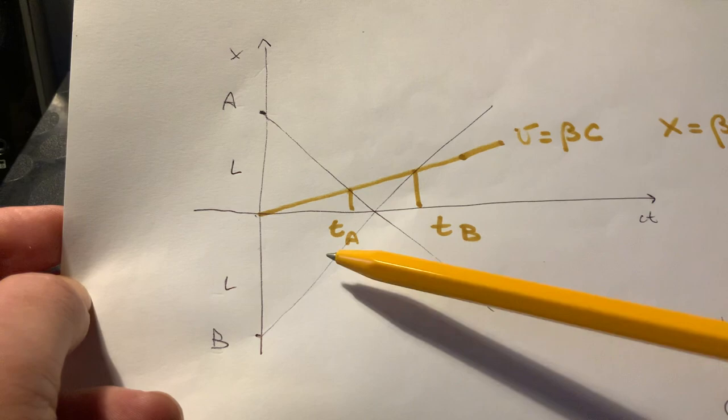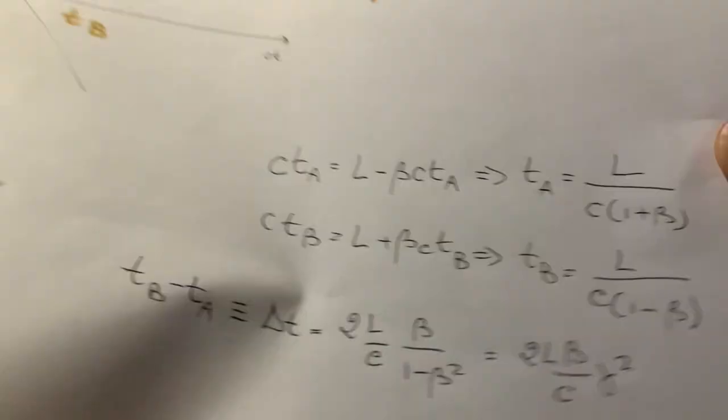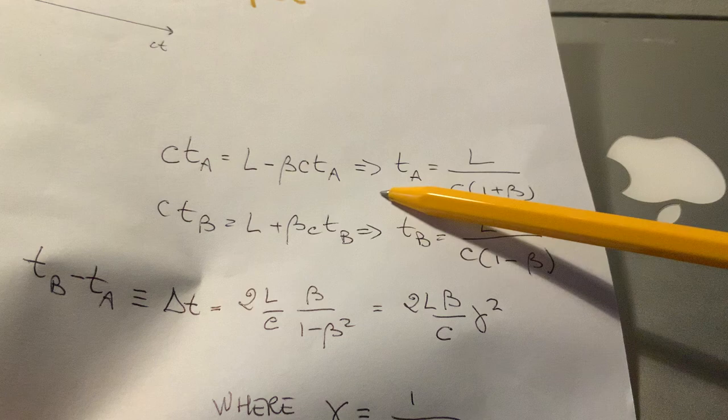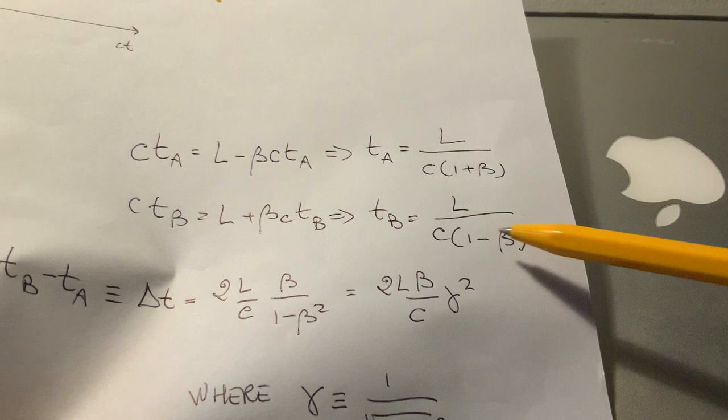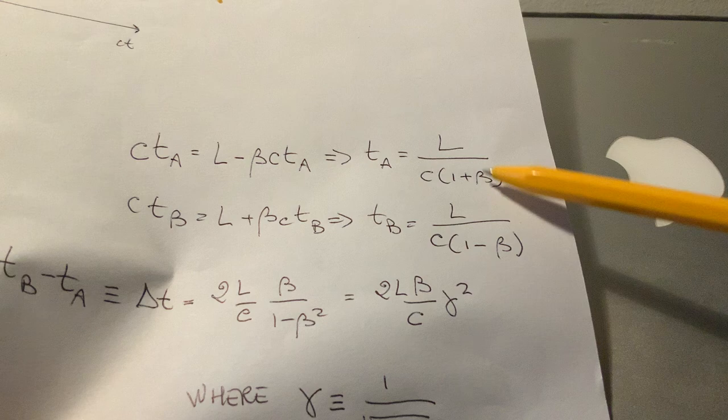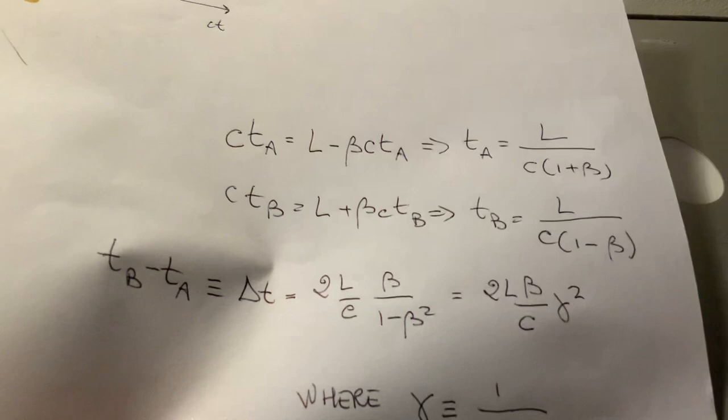And the two times, TA and TB can be computed with these equations, right, intersecting the two lines. And you see that TA is equal to L divided by C times (1 plus beta). And TB is L divided by C times (1 minus beta). So TB is greater than TA. And you see that it's nice that for beta equals zero, meaning that the observer is stationary, then you will have that TA equals TB and it's L over C.